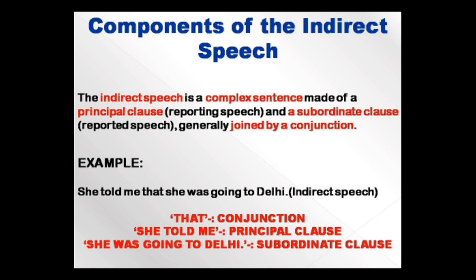Components of indirect speech: indirect speech is actually a complex sentence made up of a principal clause and a subordinate clause joined by a conjunction. The principal clause is the reporting speech and the subordinate clause is the reported speech. For example: 'She told me that she was going to Delhi.' Here, 'she told me' is the reporting speech and principal clause, 'she was going to Delhi' is the subordinate clause or reported speech, and both are joined by 'that'. This indirect speech is also a form of complex sentence.